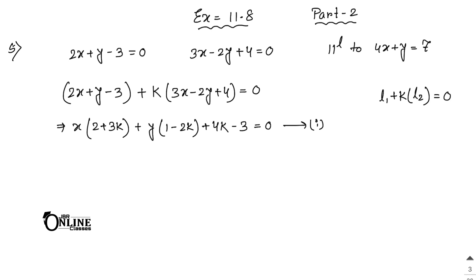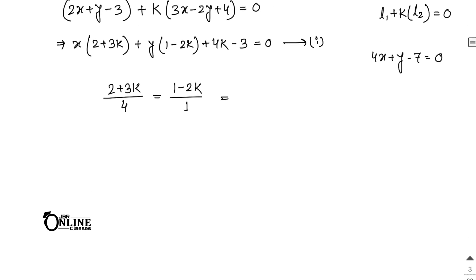Now, if the required straight line is parallel to the line 4x plus y minus 7 equal to 0, then you can write down that the coefficient of x over 4 equals the coefficient of y over 1, that means: 2 plus 3k divided by 4 equals 1 minus 2k divided by 1. By cross multiplying, 2 plus 3k equals 4 minus 8k, so 11k equals 2, meaning k equals 2 by 11.